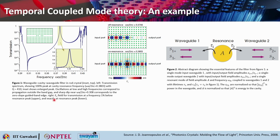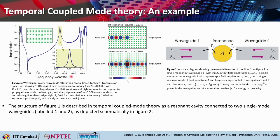Let us start the example of applying Temporal Coupled Mode Theory to a practical example of a narrowband filter. The structure in figure 1 is described in TCMT as a resonant cavity connected to two single-mode waveguides labeled waveguide 1 and waveguide 2. This is a waveguide-cavity-waveguide filter in a rod crystal.